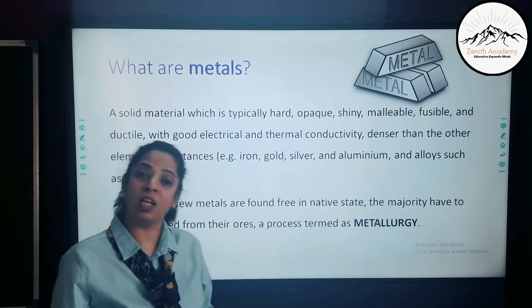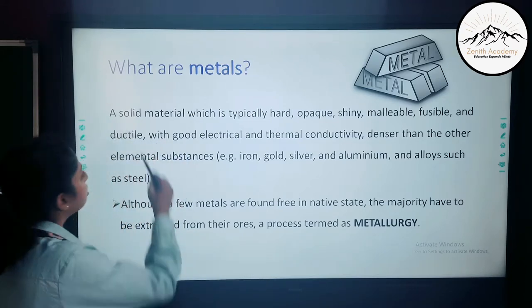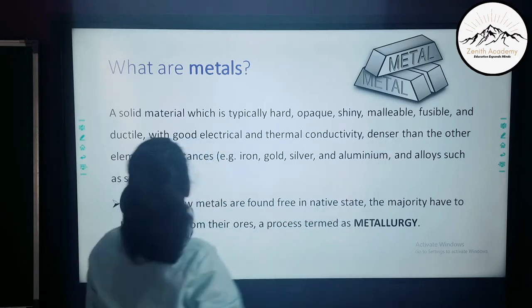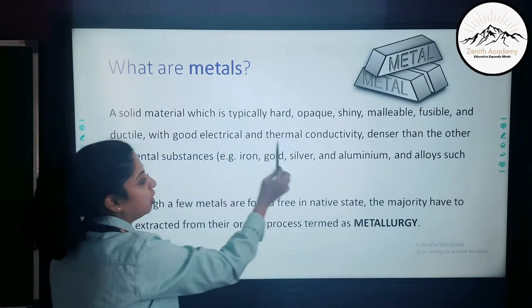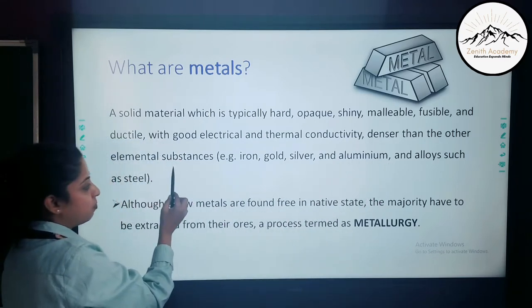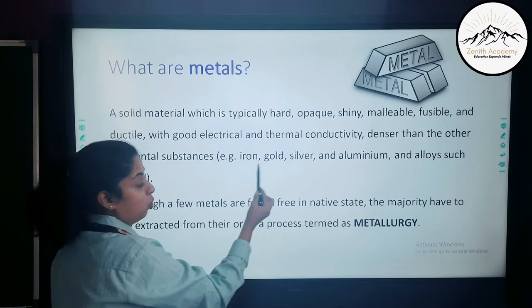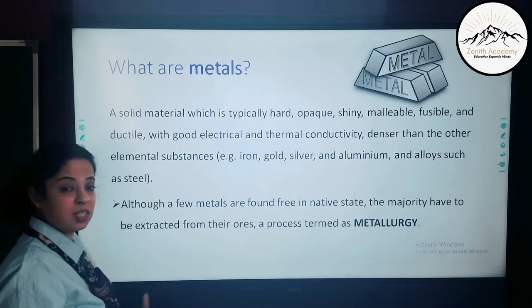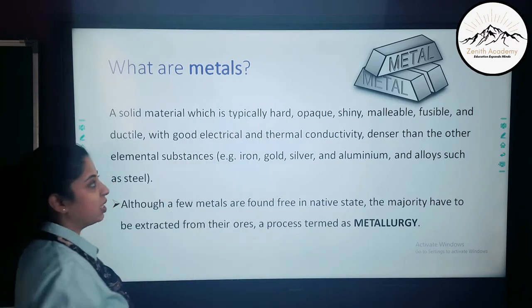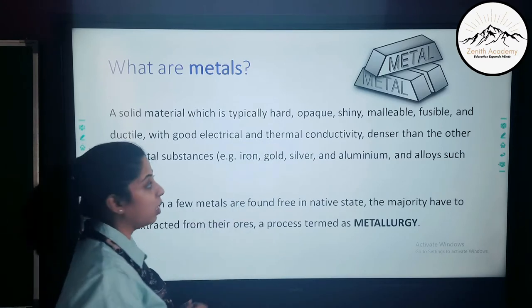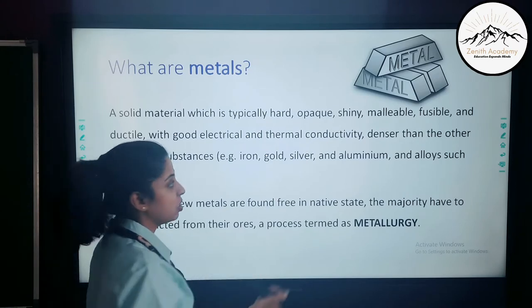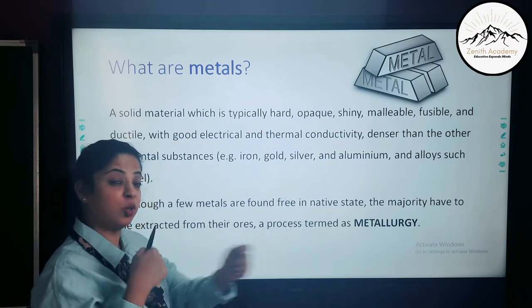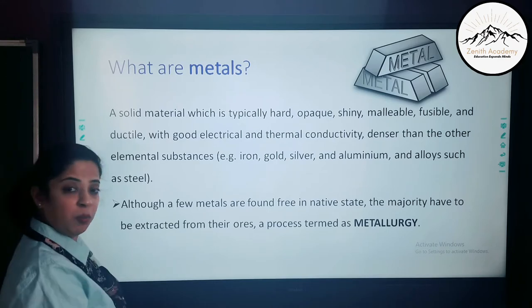Before studying metallurgy in detail, let us talk about metals. Metals are solid materials which are typically hard, opaque, shiny, malleable, fusible, and ductile, with good electrical and thermal conductivity, and are denser than other substances. Examples include iron, gold, silver, aluminium, and alloys such as steel. Metals are malleable and ductile — they can be beaten into thin sheets and stretched into wires.